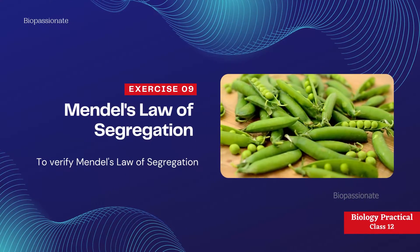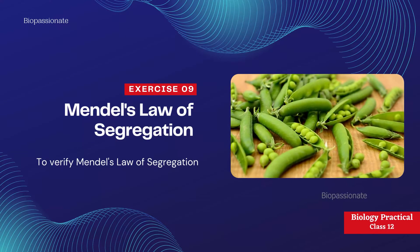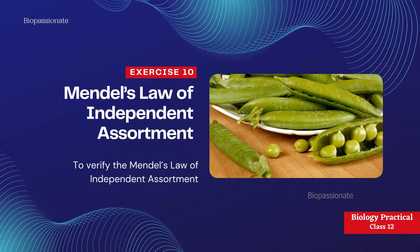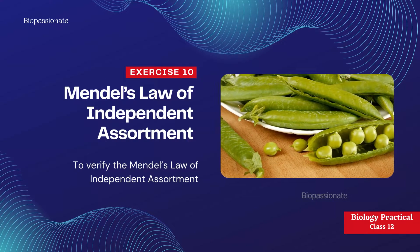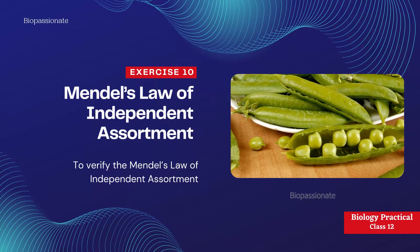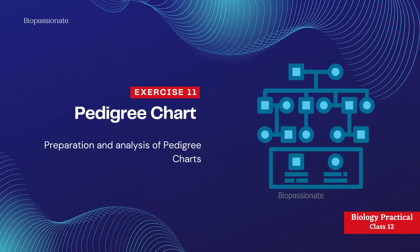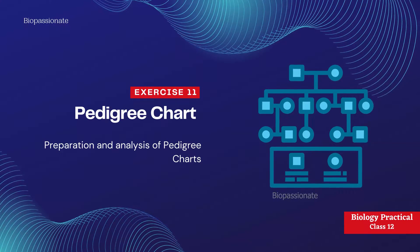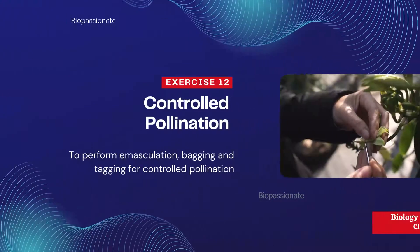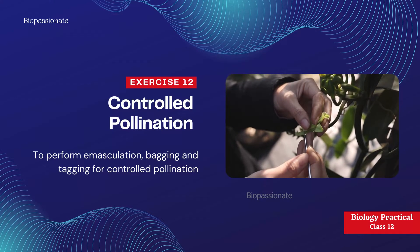Exercise number nine: Mendel's law of segregation — it's a forgotten experiment; the aim is to verify Mendel's law of segregation. Exercise number ten: Mendel's law of independent assortment — another forgotten experiment — to verify Mendel's law of independent assortment. Exercise number eleven: pedigree chart — preparation and analysis of a pedigree chart.